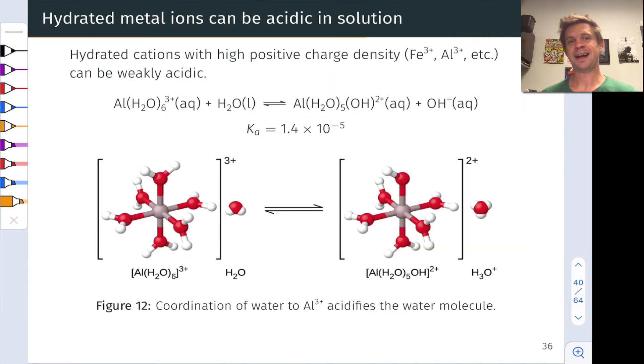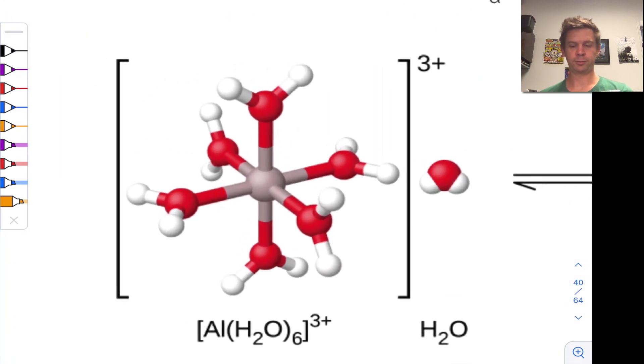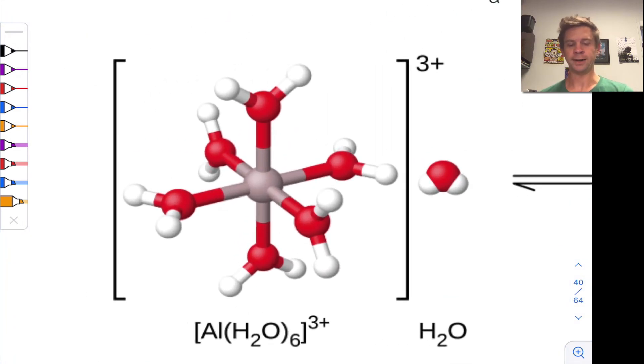A little bit earlier, we noted that hydrated metal cations can serve as acids, and this slide gives us a nice picture of how this works. Take, for example, the aluminum 3 plus cation. When that's dissolved in water, it's surrounded by water molecules. And a kind of archetypal picture of this is six water molecules in an octahedral arrangement around the aluminum center. That's what you're seeing right here.